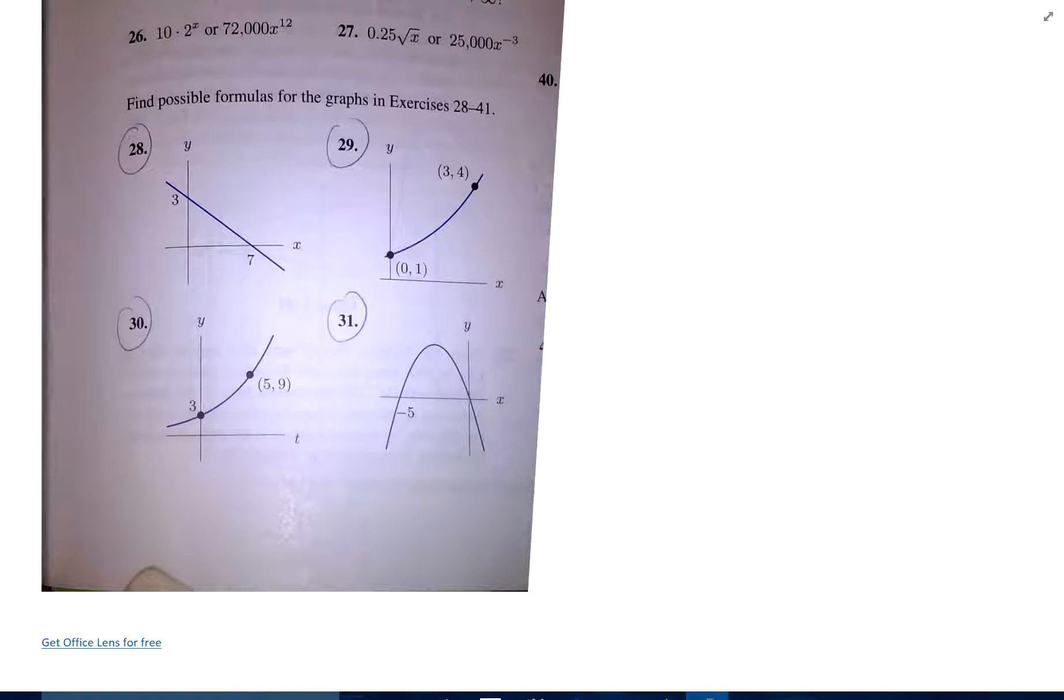Okay, here we go. We want to write possible formulas, and the keyword is possible. Some of these we can write exact formulas for them, and other ones we just kind of have to make our best guess looking at it, as you'll see. So on 28, that is certainly a straight line.